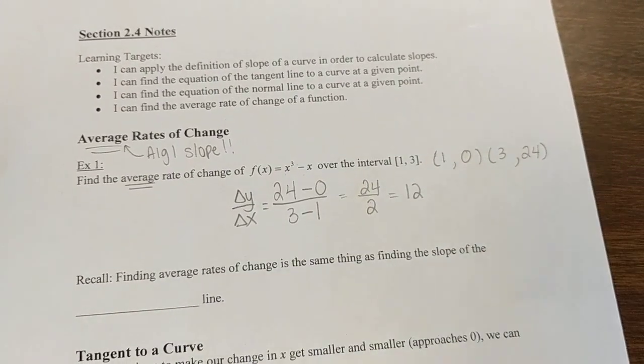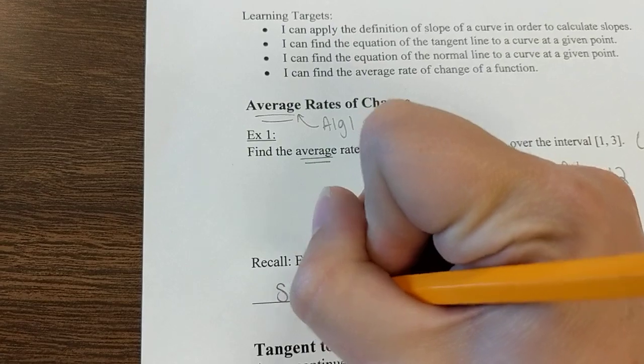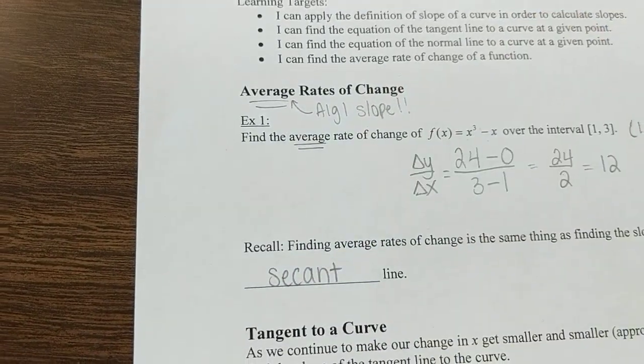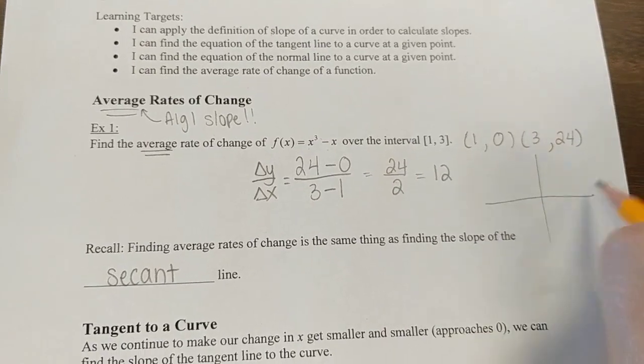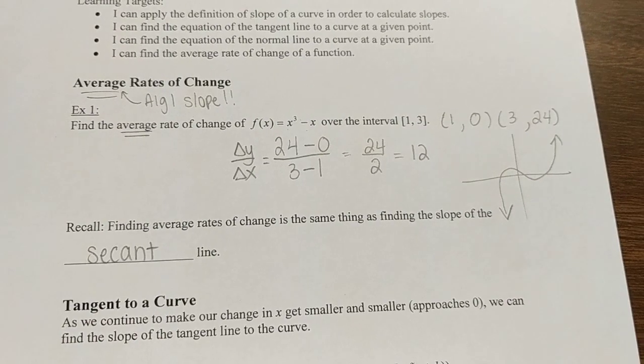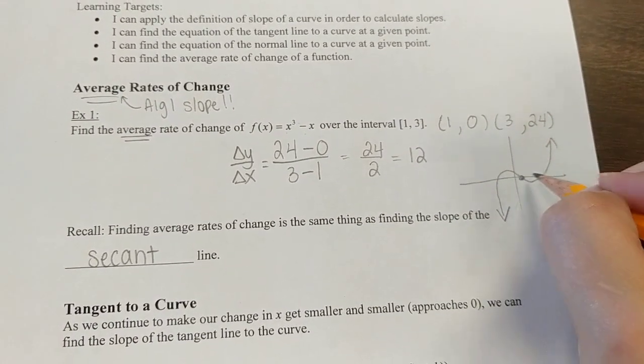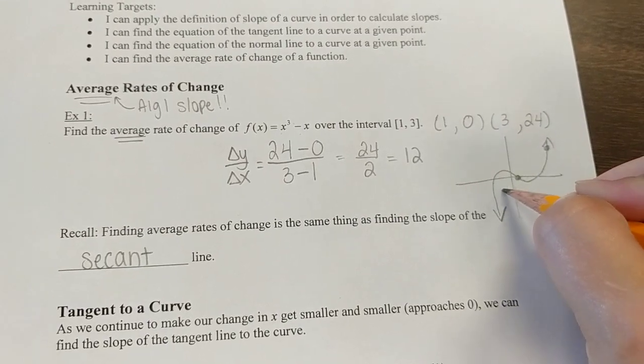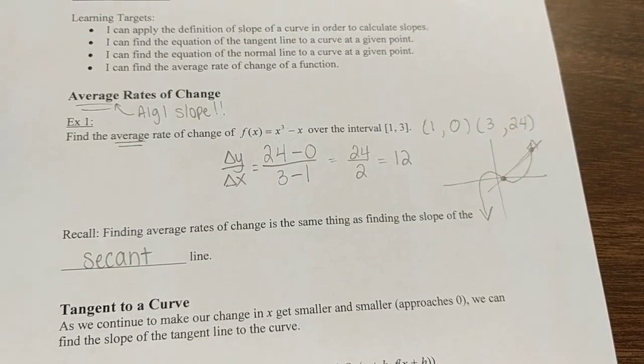When we find average rates of change, it's the same thing as finding the slope of what we call the secant line. This particular function, x cubed minus x, kind of looks like this. So 1, 0 to 3, 24 - we have found the slope of that line, the line that connects those two points.